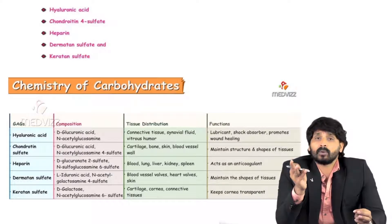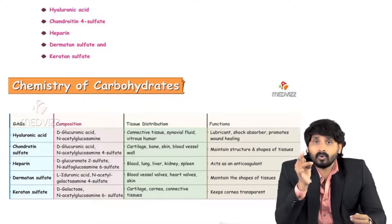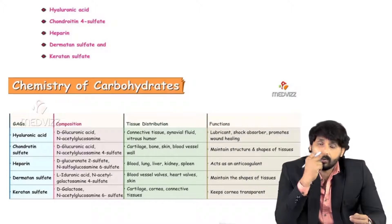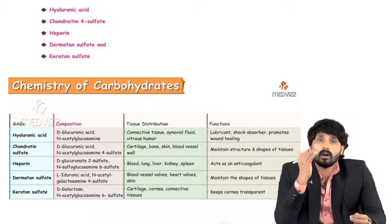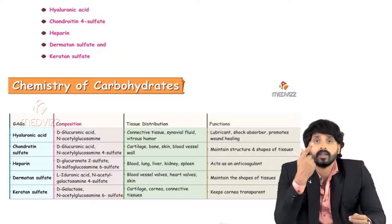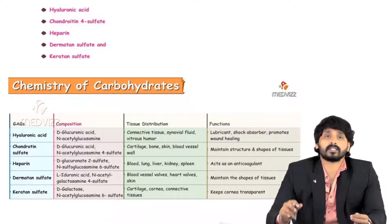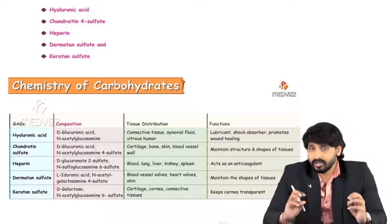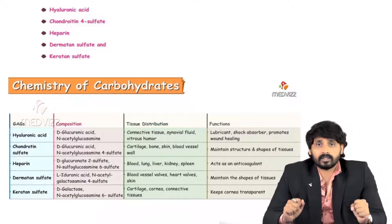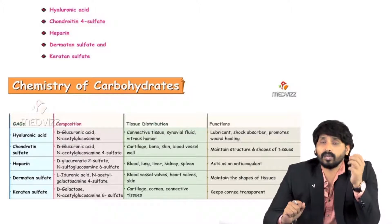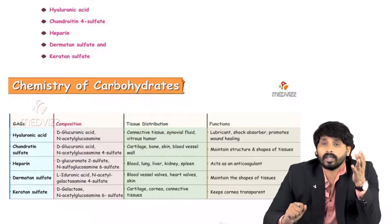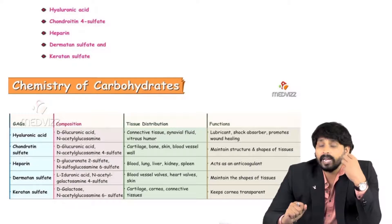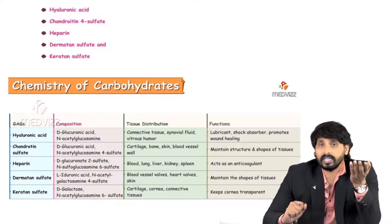The tissue distribution of hyaluronic acid: connective tissues, synovial fluids, and vitreous humor. Our eyes are always lubricated because of hyaluronic acid. The main function of hyaluronic acid in synovial fluid and connective tissue is that it acts as a lubricant.